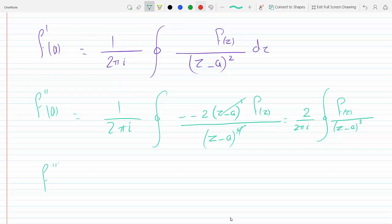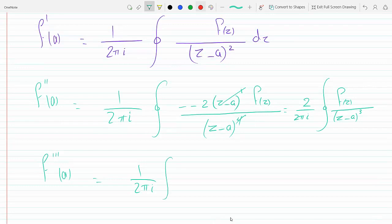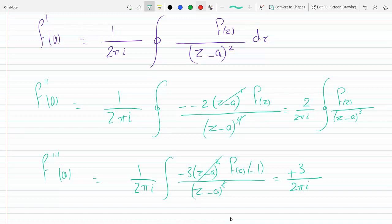Now if you were to take the third derivative, what will happen? If you keep on doing this, you're going to get again quotient rule, so 0 minus 3, z minus A squared times F of z times minus 1 chain rule, over z minus A to the 6th because cube squared. Two go away and we get what do we get? Minus 3. Minus and minus plus, 3 over 2 pi i, closed integral F of z over z minus A to the 4th. Okay, so the pattern is somewhat clear.